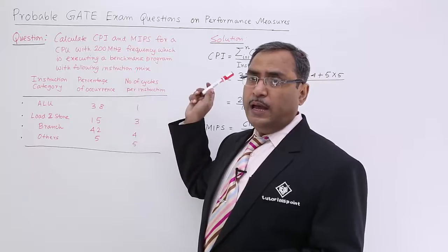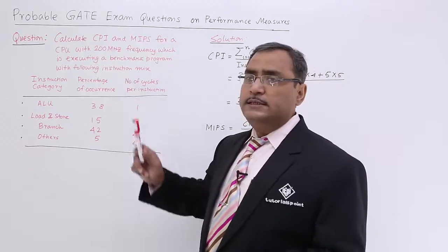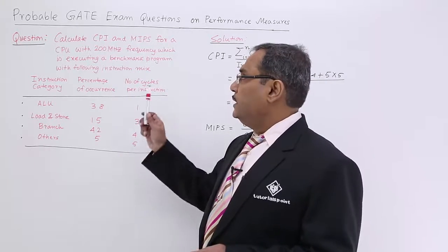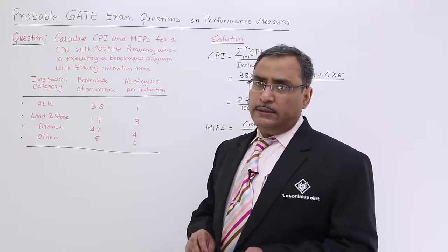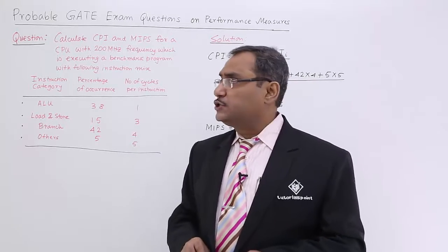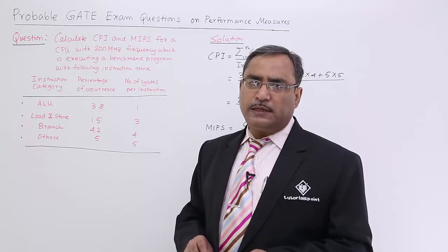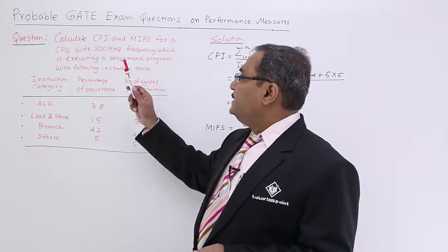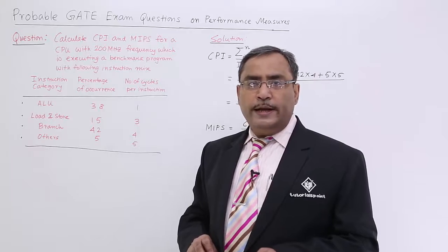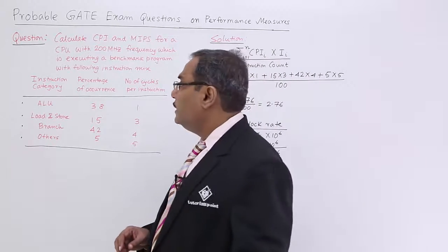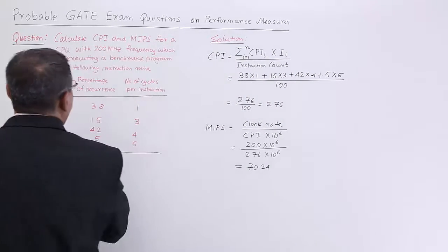This is a question and here we will be having the answers. Let us discuss the question at first. Calculate the CPI, that is cycles per instruction, and MIPS, million instructions per second, for a CPU with 200 megahertz frequency.